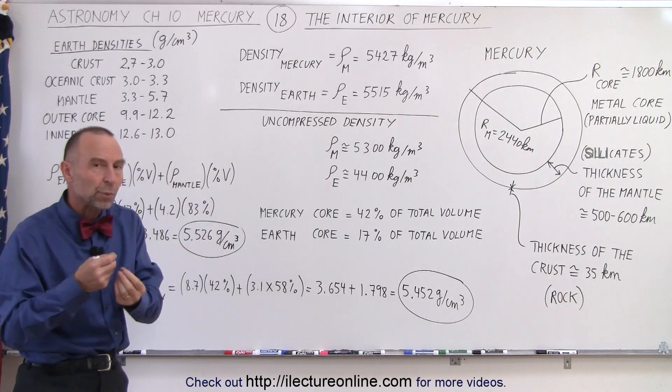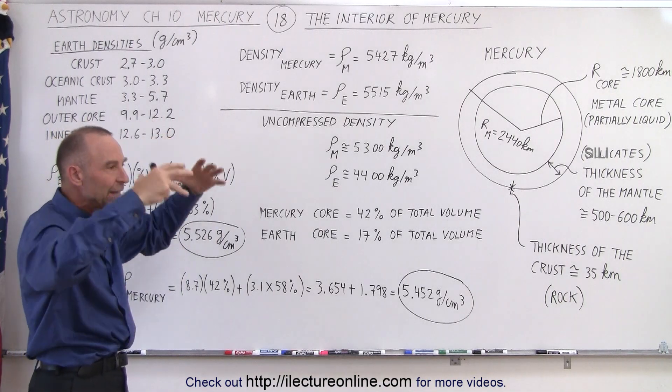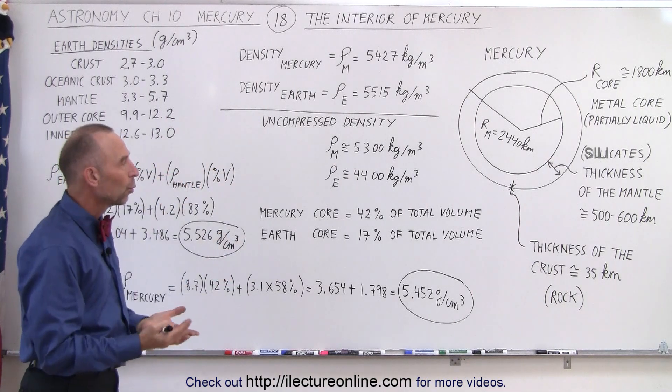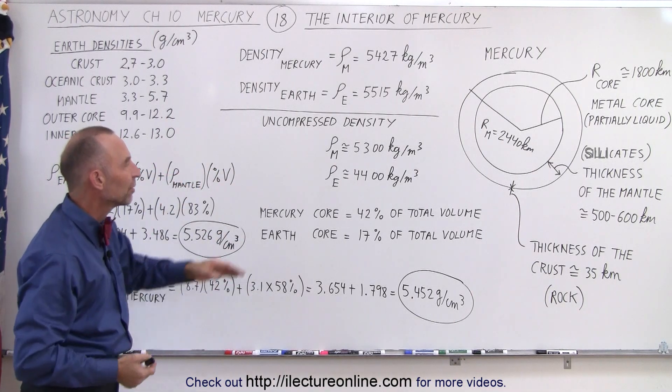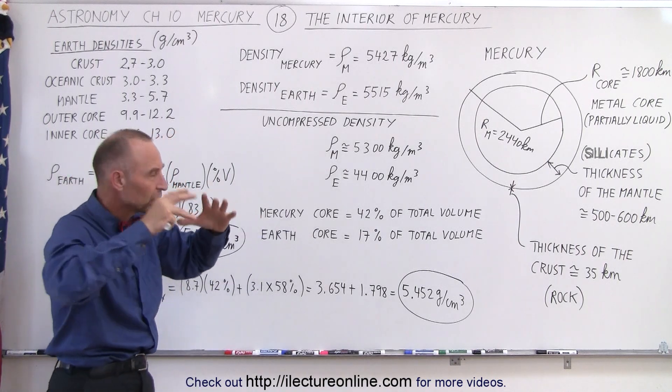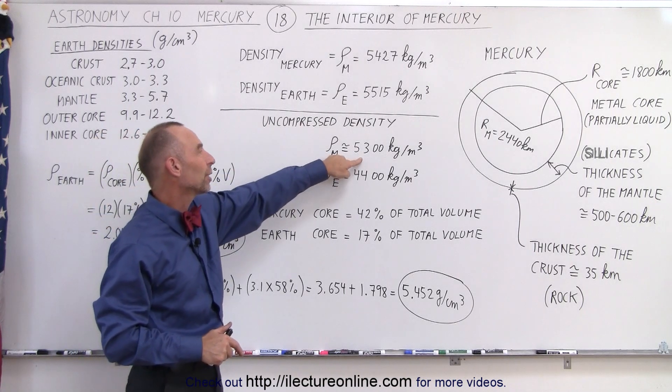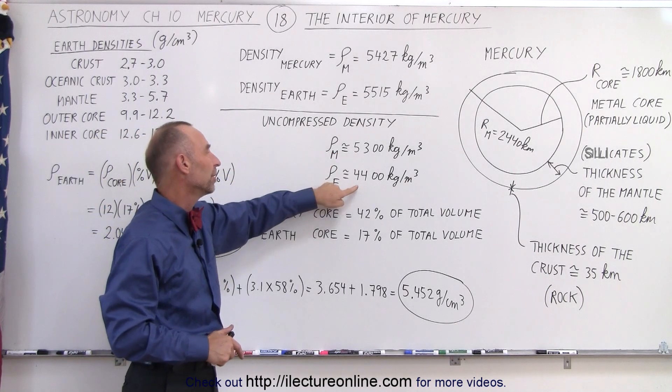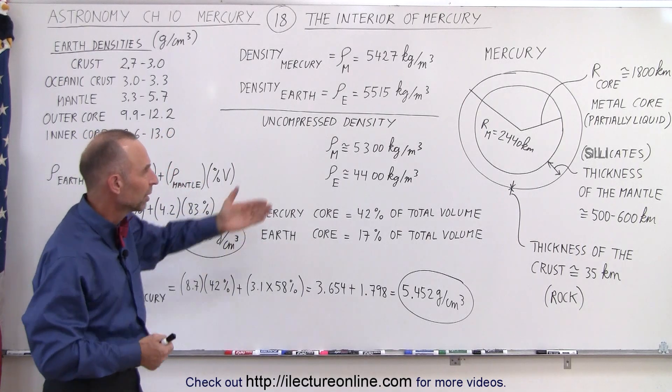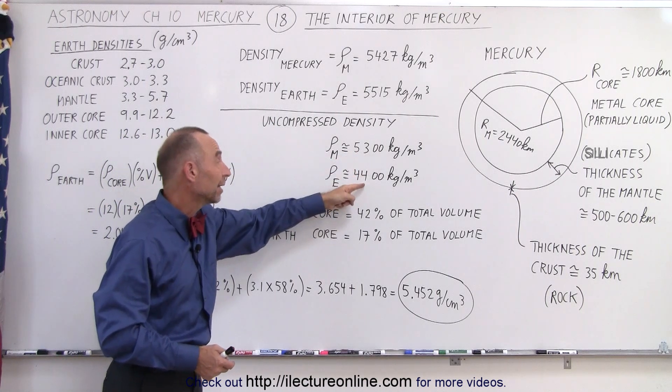We try to do a similar kind of thing, but we also try to calculate what we call the uncompressed density. If the enormous weight of the planet wasn't bearing down on the interior, what would be the uncompressed density? For Mercury it would be 5300 kilograms per cubic meter, and for the Earth it would be about 4400 kilograms per cubic meter. This would then indicate that Mercury has a much higher percentage of metal than the Earth.